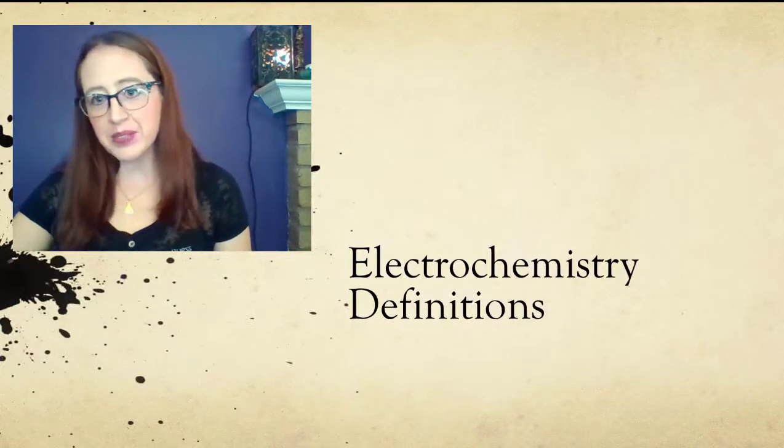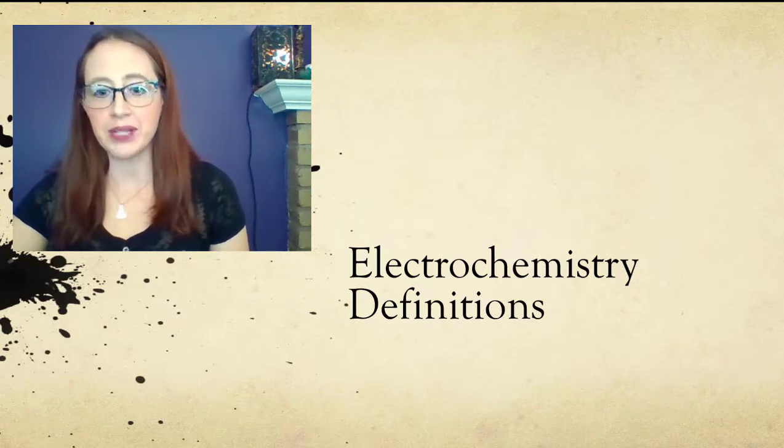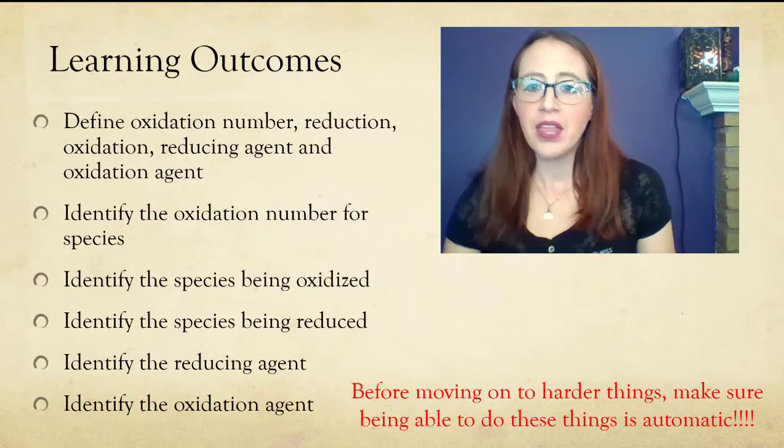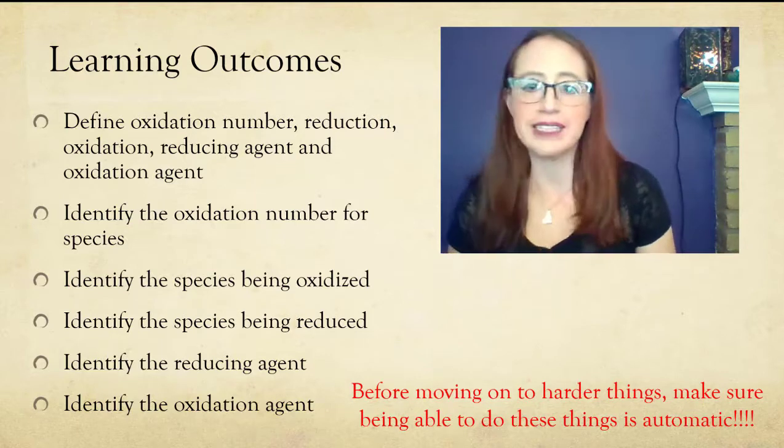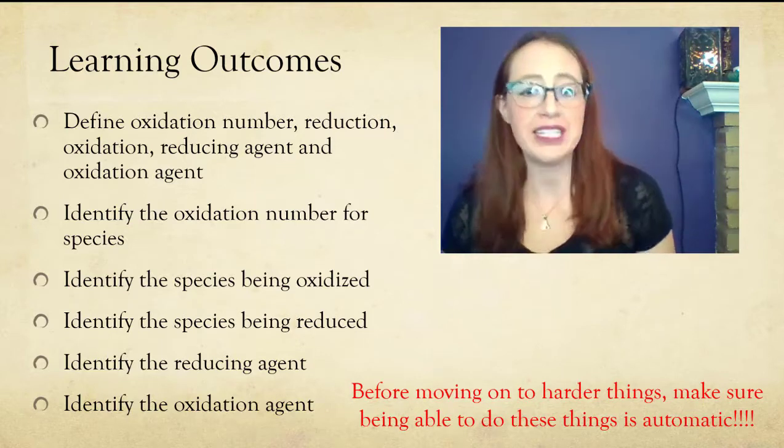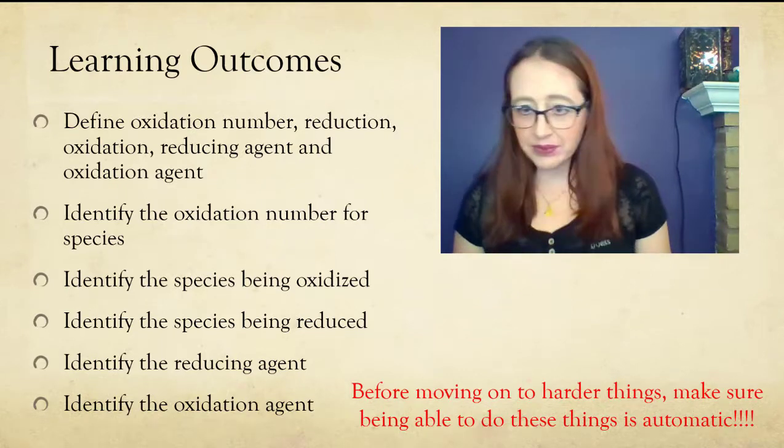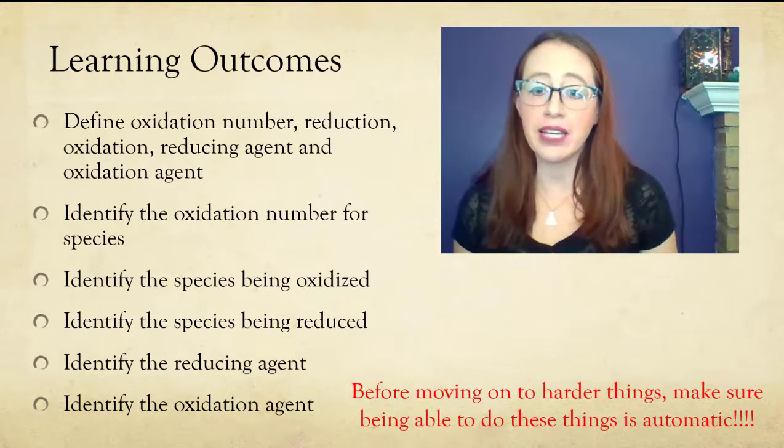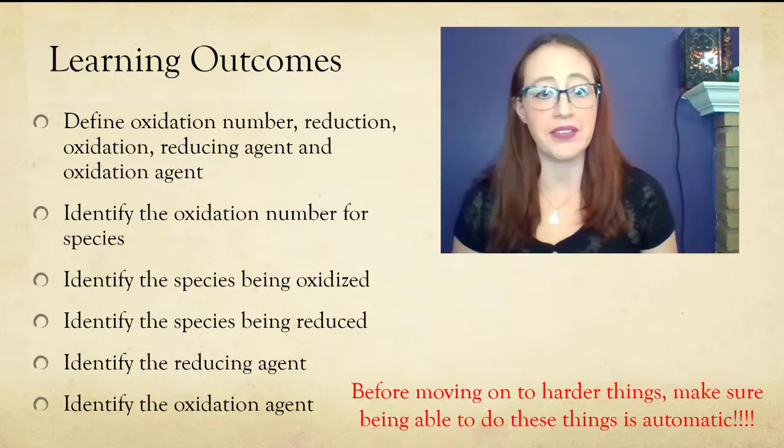Electrochemistry definitions. This video is all about the definitions that we need to be able to communicate about electrochemistry. Though this video may seem a bit on the boring side for topics, it actually is very important that you can quickly identify things like the oxidation number, the species being oxidized and reduced, and then the oxidizing and reducing agent. This is going to allow you to communicate and complete all the more complex and interesting problems and questions that follow. So please spend some time really perfecting the topics in this video.